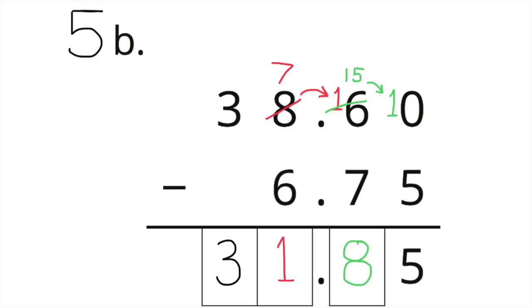Part B: 38.6 or 38.60 minus 6.75. The difference is 31.85.